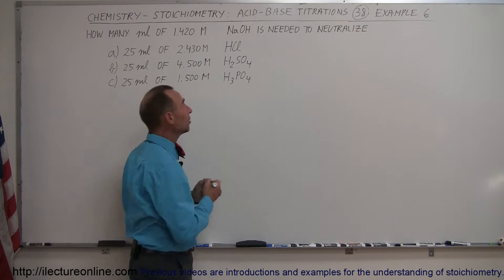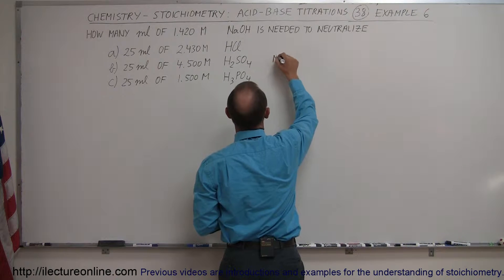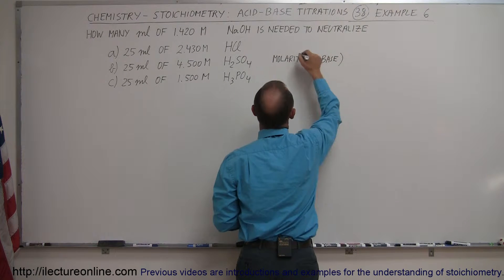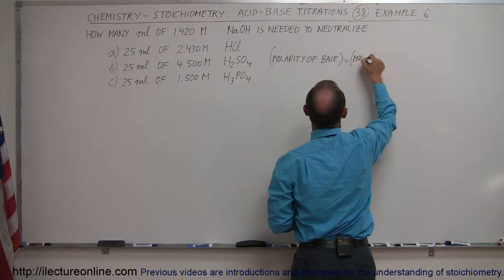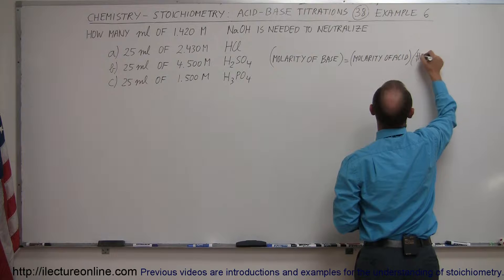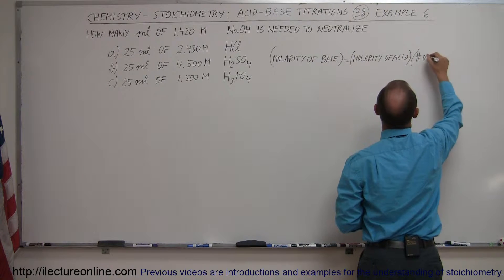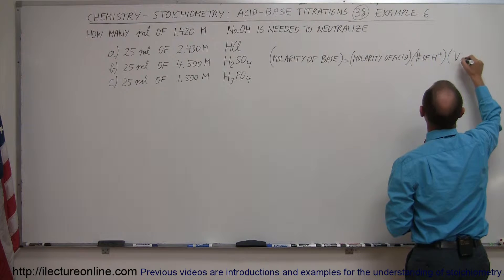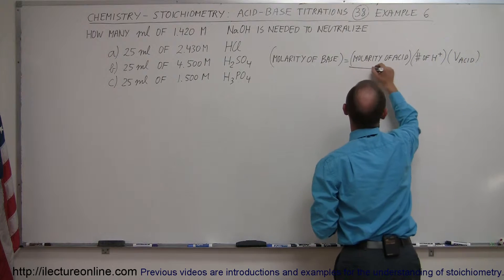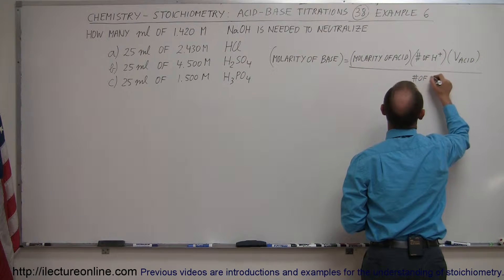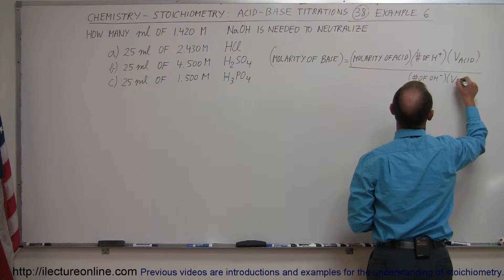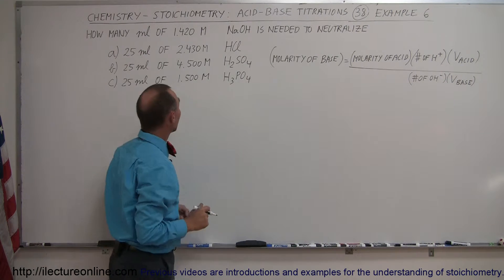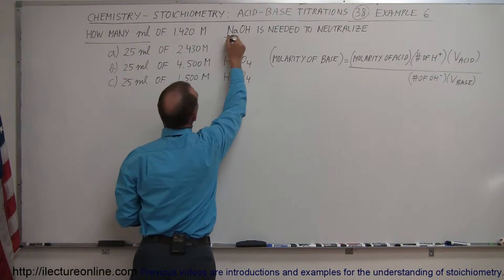First of all, we want to start with the basic equation. The molarity of the base is equal to the molarity of the acid times the number of hydrogen ions per molecule produced, times the volume of the acid, divided by the number of hydroxide ions produced times the volume of the base.